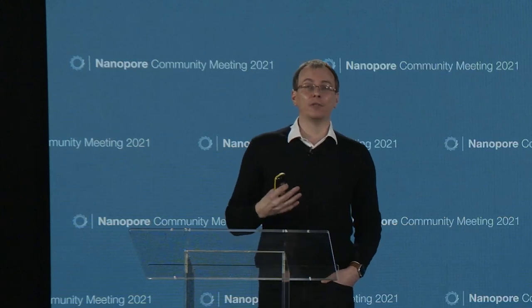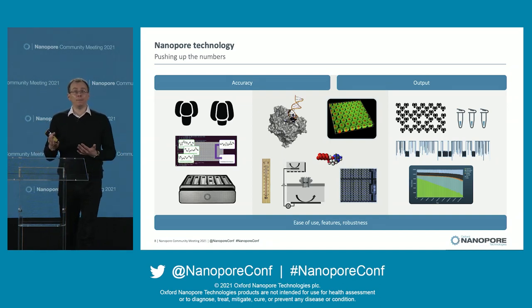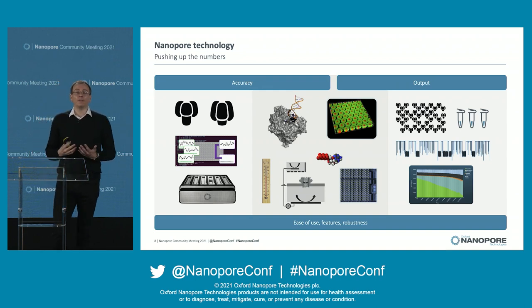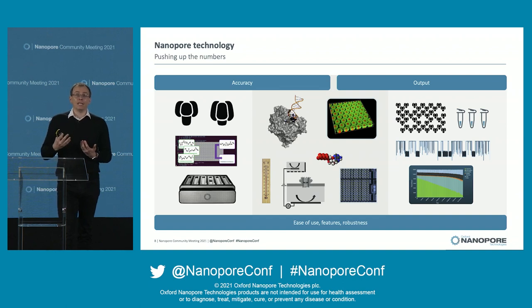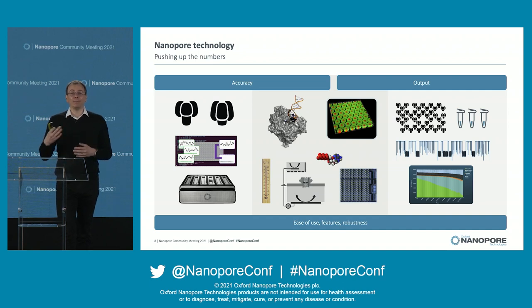In R&D, we concentrate our efforts on the core values of the platform: accuracy, output, and underlying all of this, ease of use, features, and robustness. Three main things drive accuracy: the Nanopore itself, which determines the chemistry of how DNA interacts with the pore; the enzyme, which moves the DNA strand through the pore and needs to be as consistent as possible; and the decoder — the base caller. Our neural network has come on leaps and bounds in the last few years.